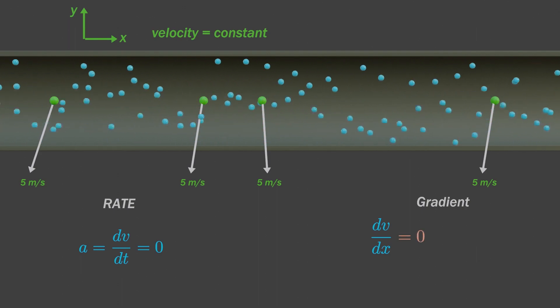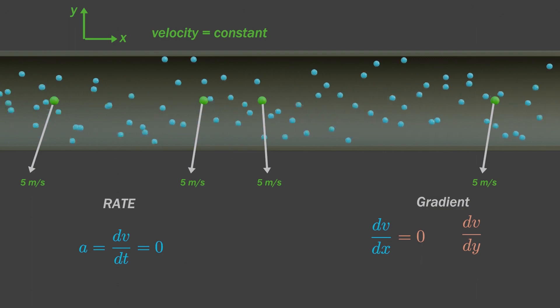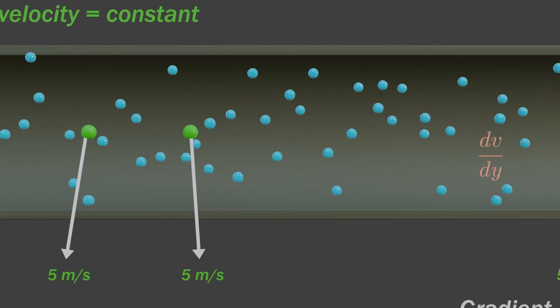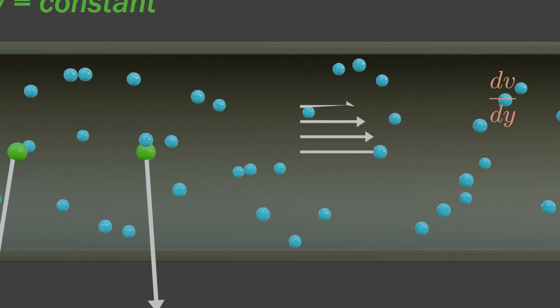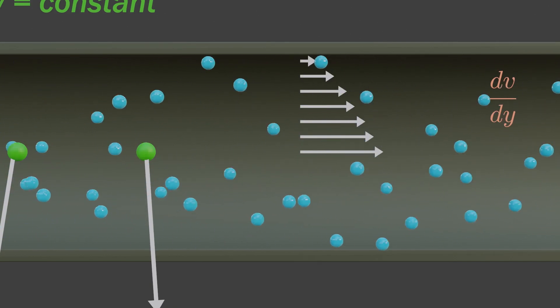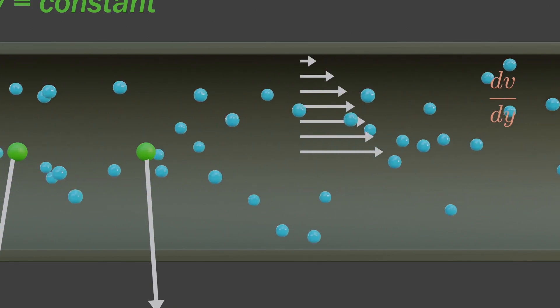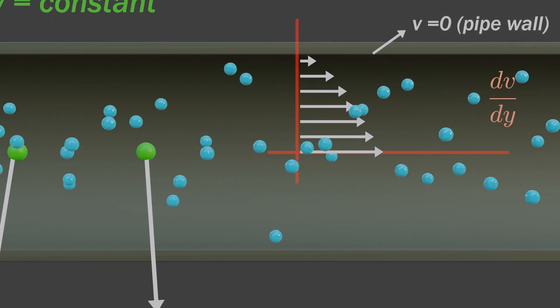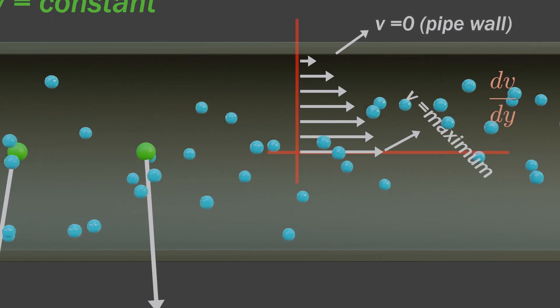But, there exists a different story for velocity in y direction. In fluid mechanics, due to no slip condition, there exists difference in velocity between adjacent layers of the fluid. Velocity at pipe wall would be zero, whereas velocity at pipe center would be maximum.